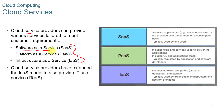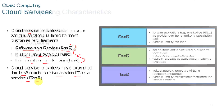The three cloud service categories are: Software as a Service (SaaS), Platform as a Service (PaaS), and Infrastructure as a Service (IaaS). Cloud service providers have also extended the IaaS model to provide IT as a Service, or ITaaS.